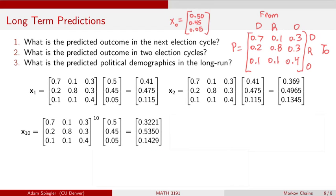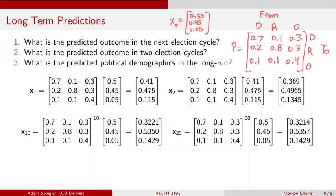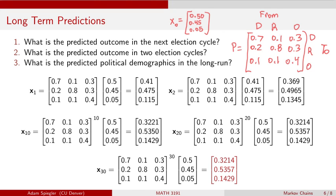Let's see what happens if we were to go 20 years out. So now we're going to multiply our initial state vector X0 by P that's raised to the 20th power. And we can see the result is 0.3214, 0.5357, and 0.1429. And then let's go another 10 years out. So if we wanted to make a prediction way out 30 election cycles from now, we can see that the result is no different than what the prediction was for 20 election cycles out.